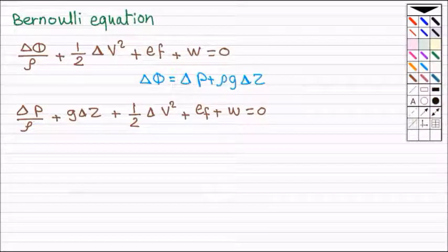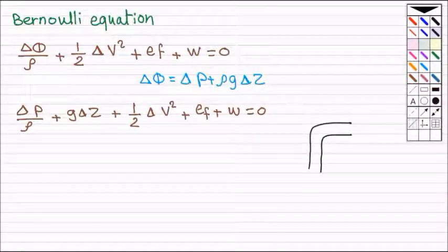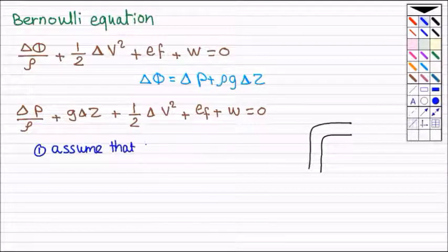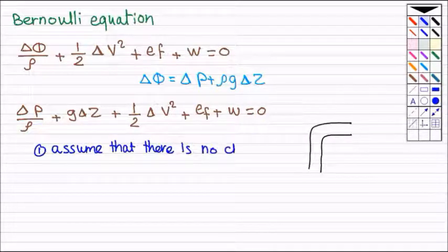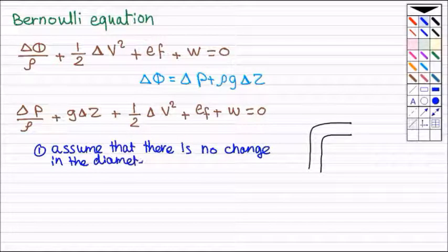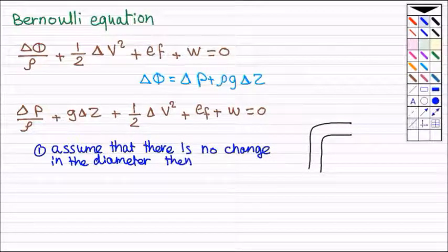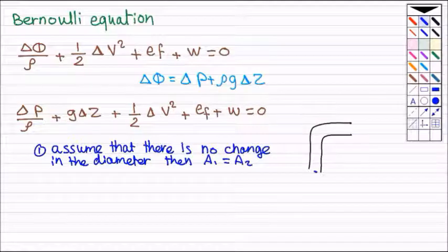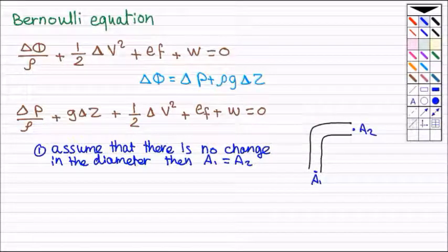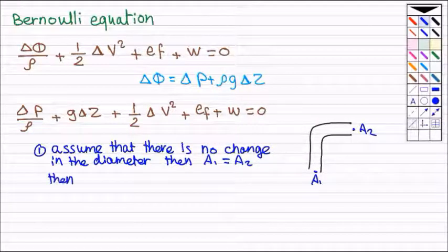We'll put some assumptions here. Let's draw our fitting and we'll assume that there is no change in the diameter. That means a1 equal to a2.